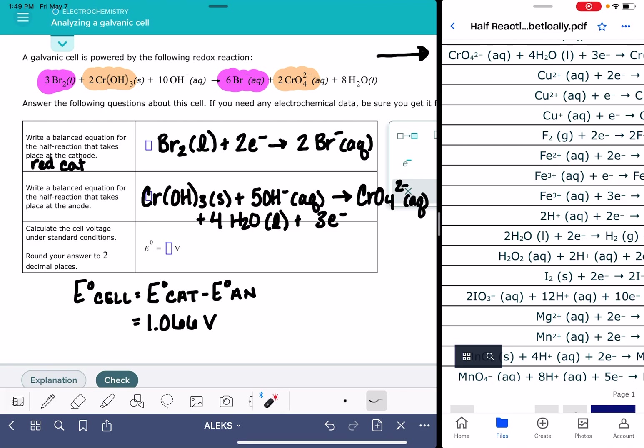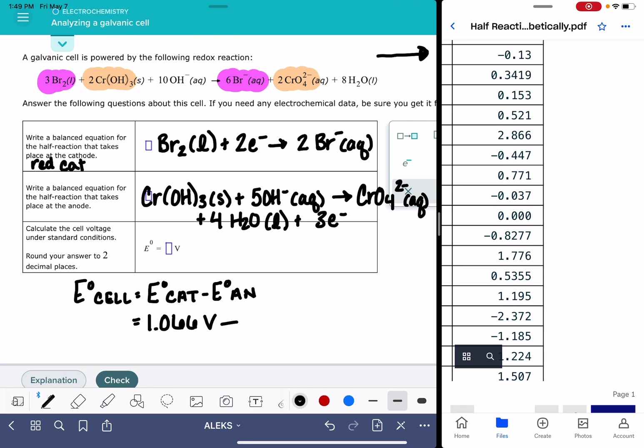And again, it's okay that the coefficients are not the same as they are in the equation, and it's okay that the number of electrons don't match up. That's totally fine. And let's get the voltage for this half reaction. It is negative 0.13.